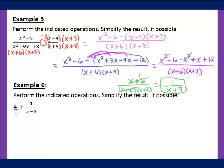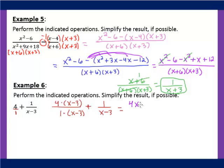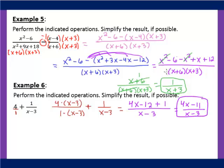Example 6: perform the indicated operation when they're not both fractions. We can make anything a fraction by putting it over 1. Our common denominator is (x minus 3), so we take the 4 and multiply it by (x minus 3) on the top and bottom. Distributing the 4 gives 4x minus 12 plus 1 from the second fraction, over (x minus 3). Adding like terms gives 4x minus 11 over (x minus 3), and that is our answer. That's adding fractions where you have to get your own common denominators.